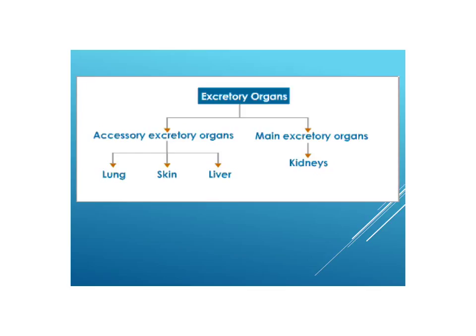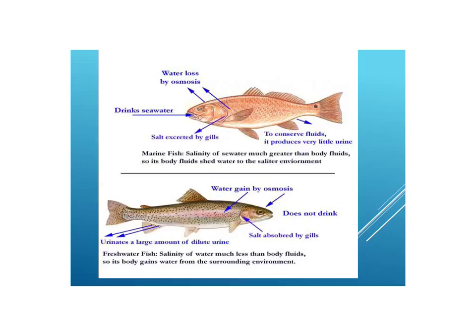We have two sets of excretory organs: the accessory organs and the main excretory organ. In most animals it's kidneys. The accessory organs include the lungs, the skin, and the liver. For fish living in a marine environment, the salinity of the seawater is much greater than the body fluids, so the body fluids shed water to the saltier environment. The fish takes in some seawater, has modified gills to excrete salt, and produces very little urine to conserve fluids.